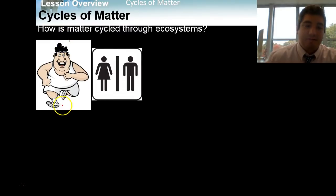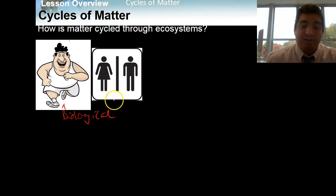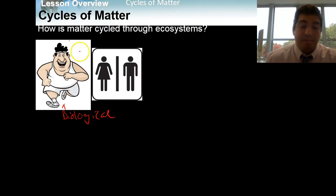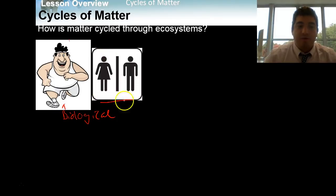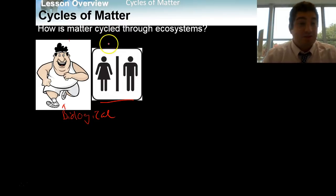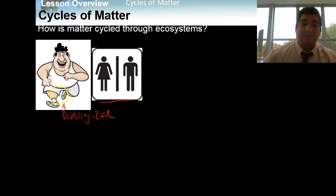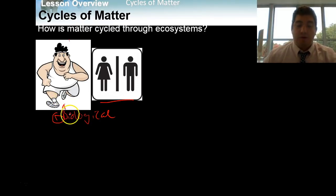If you go out and exercise, you're going to use matter. You're going to burn off energy like proteins, carbohydrates, lipids. Also, whenever we go to the bathroom, we're going to excrete waste, and in that waste there still is plenty of matter — there are nutrients in there and other physical material. So the first way matter is cycled through the ecosystem is through biological processes.